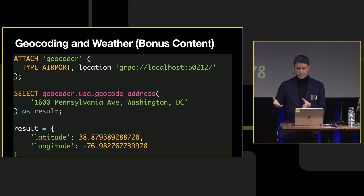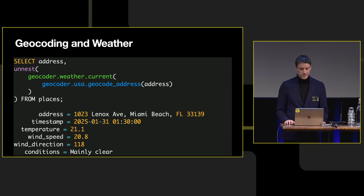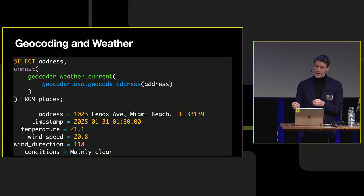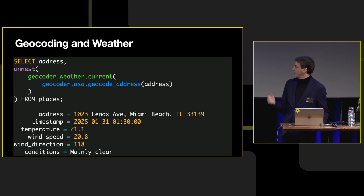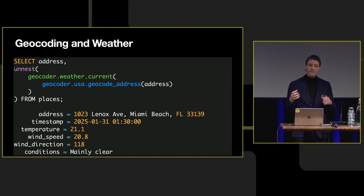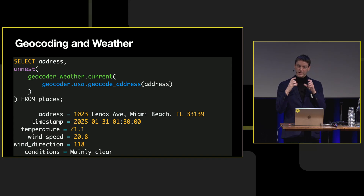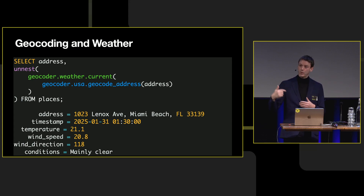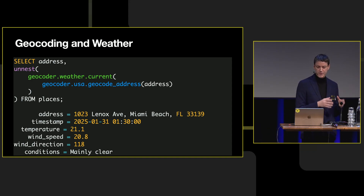I wanted to know where the White House is — 1600 Pennsylvania Avenue — here's the latitude and longitude for that. Here's another example where we have a geocoder service that can take an address and grab the current weather conditions. I used to live in Miami Beach — this is the current weather as of last night down there. This is a scalar function returned by airport.